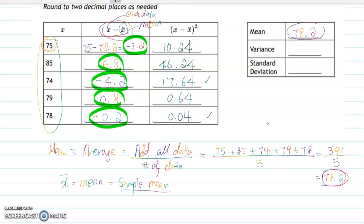If you do the same procedure for all values, you get these amounts. Now find the sum of this last column: 10.24 plus 46.24 plus 17.64 plus 0.64 plus 0.04, which equals 74.8. Now I'm going to introduce how to calculate the sample variance and sample standard deviation based on this sample data.